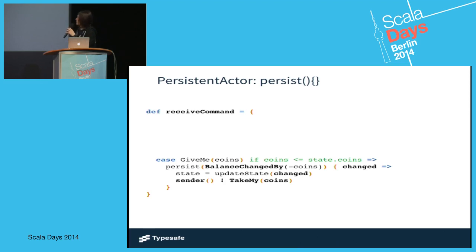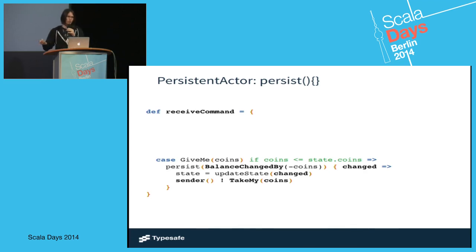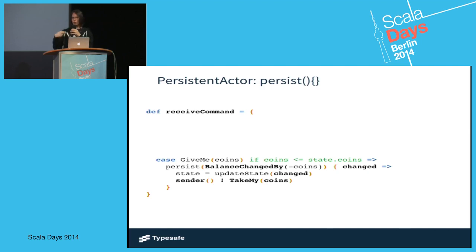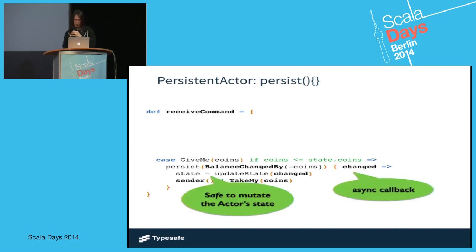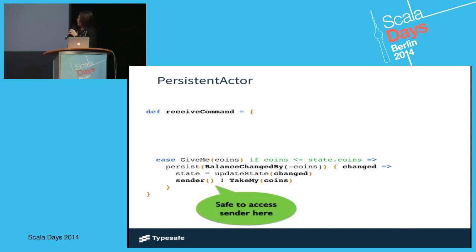The second case is someone wants money from me, so here we do a validation right away. If I'm able to give you this amount of money, I will — persist with a minus here, then reply with "here's my money." In these callbacks from persist, you're guaranteed to be safe to modify your state and also safe to reply to whoever sent you the command.